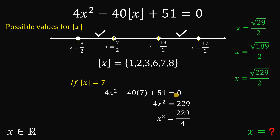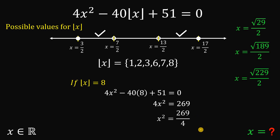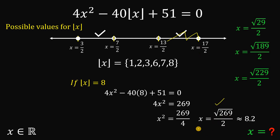Last case: when the floor value of x equals 8. We have 4x squared minus 40 times 8 plus 51 equals 0. Simplifying, 4x squared equals 269. Dividing both sides by 4 and taking the square root, x equals square root of 269 over 4, approximately equal to 8.2, which is in the valid region. Therefore, we have found the last possible value of x that satisfies this equation.